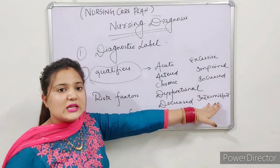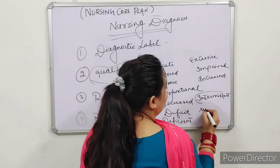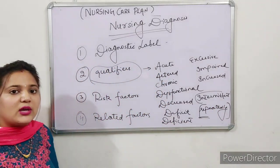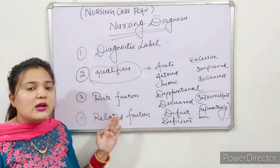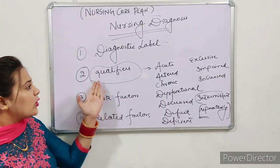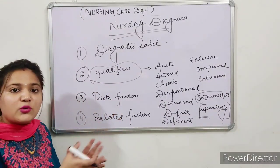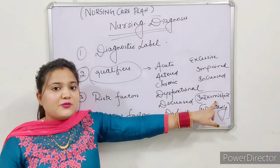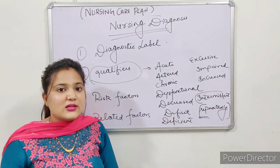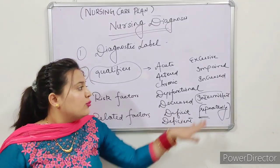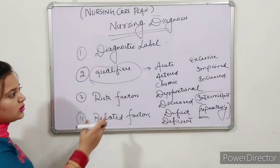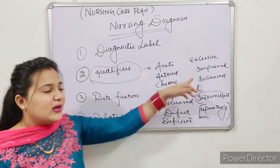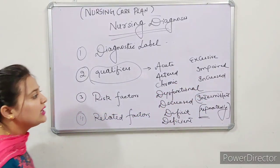Intermittent means repeatedly but with a gap in between. For example, 'Intermittent Fever' — the qualifier adds additional meaning. The fever comes, then after 4-6 hours there is no fever, then it returns. That is what we call intermittent. Acute, Altered — I hope you know the meanings. Impaired means damaged. All these qualifier meanings you should know.